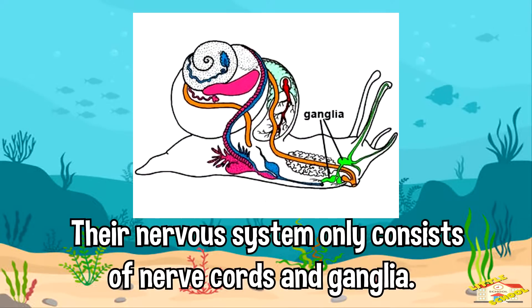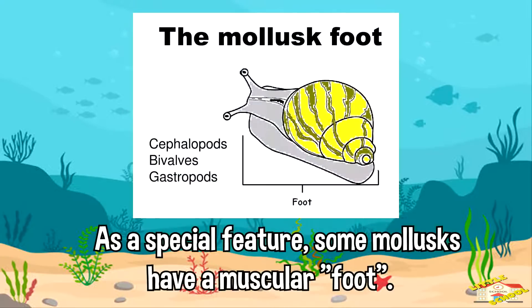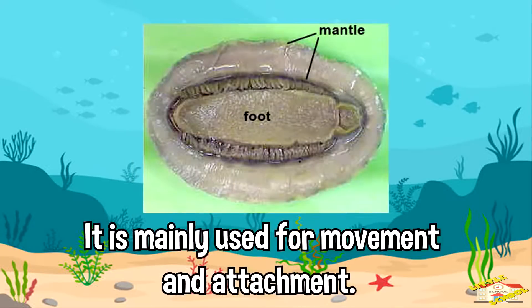Mollusks have a nervous system. The nervous system of mollusks is quite unique — it only consists of nerve cords and ganglia. Ganglia are masses of nerve cell bodies. As for a special feature, mollusks have a muscular foot, which is mainly used for movement and attachment.